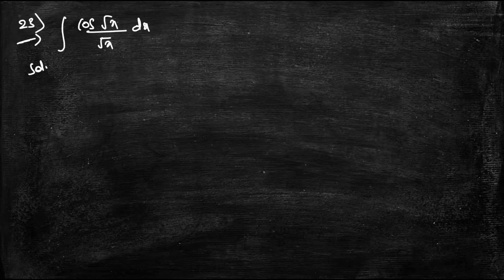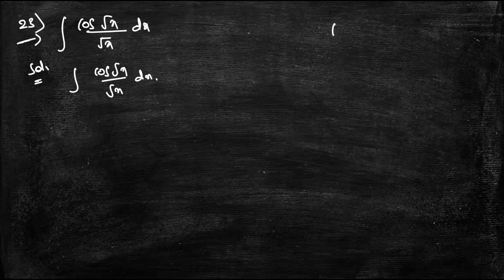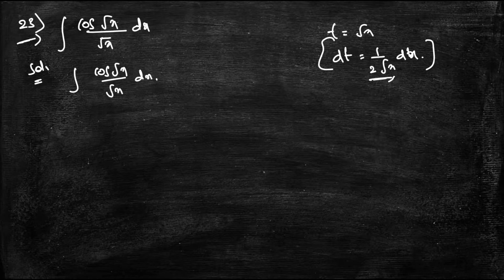Question 23: The given integral is ∫cos(√x)/√x dx. I take t = √x, so dt = 1/(2√x) dx. Please remember that the derivative of √x is 1/(2√x).